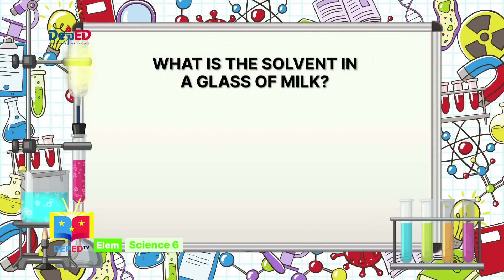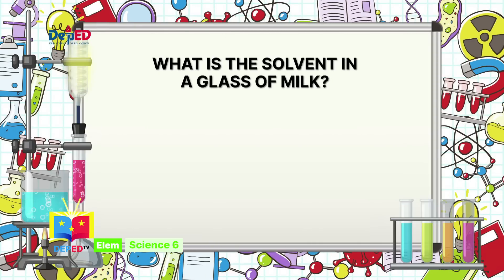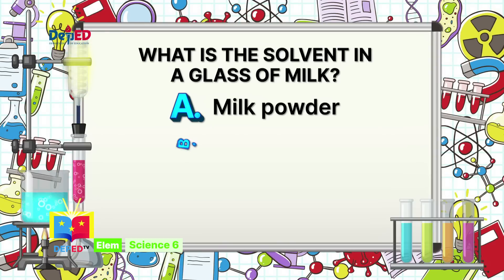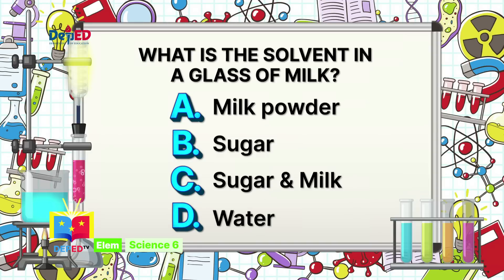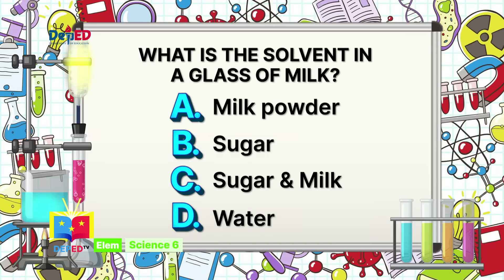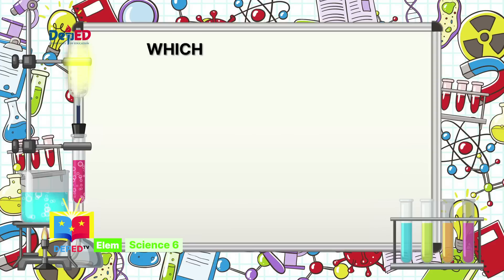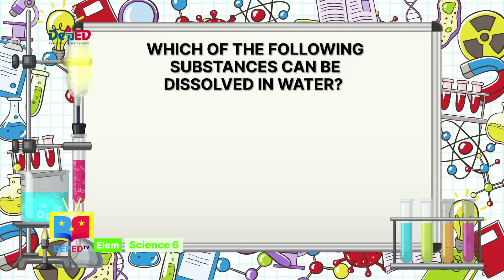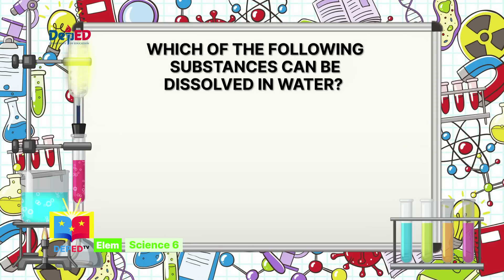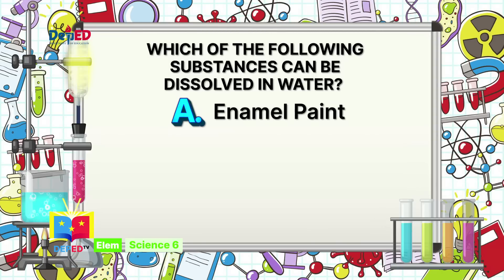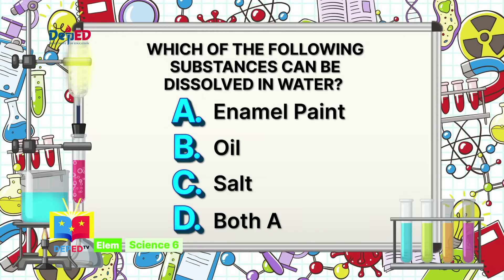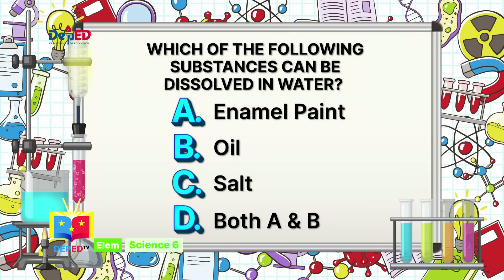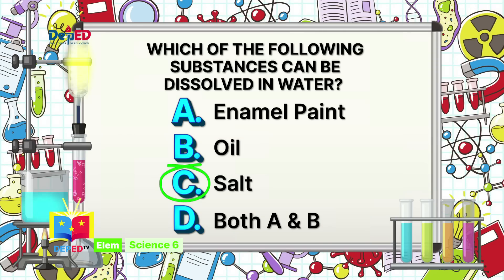Number 4: What is the solvent in a glass of milk? A. Milk powder, B. Sugar, C. Sugar and milk, D. Water. The correct answer is D — water. Number 5: Which of the following substances can be dissolved in water? A. Enamel paint, B. Oil, C. Salt, D. Both A and B. The correct answer is C — salt. That was amazing, science-minded learners!